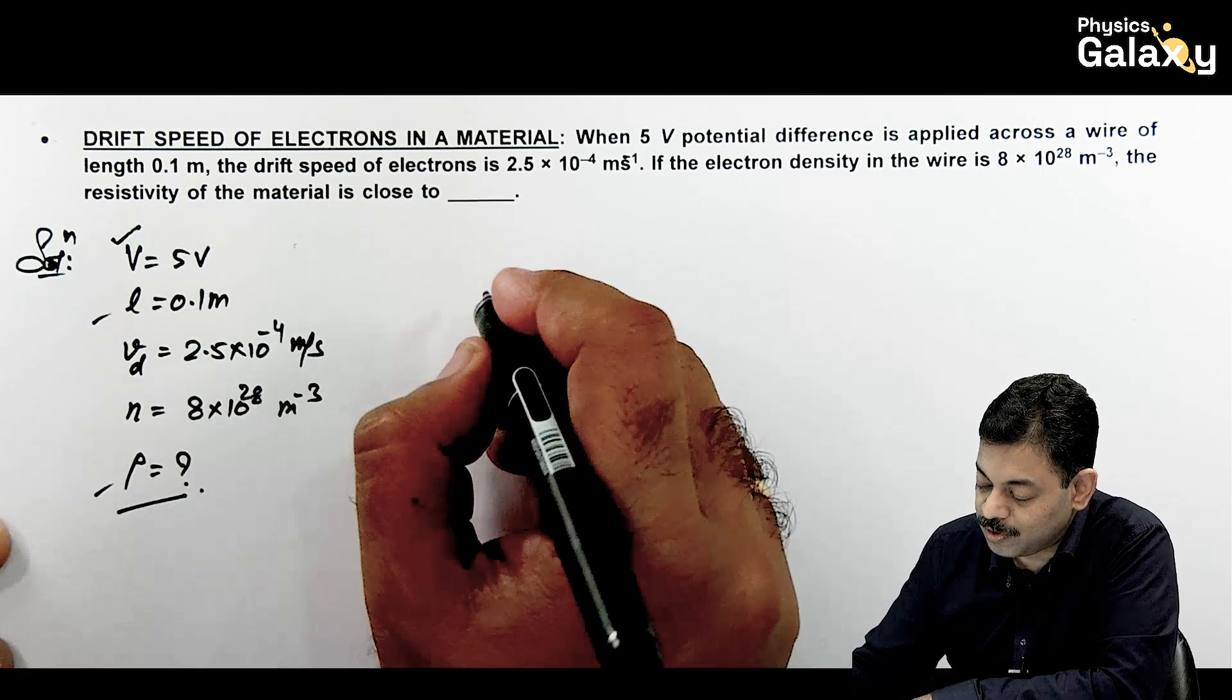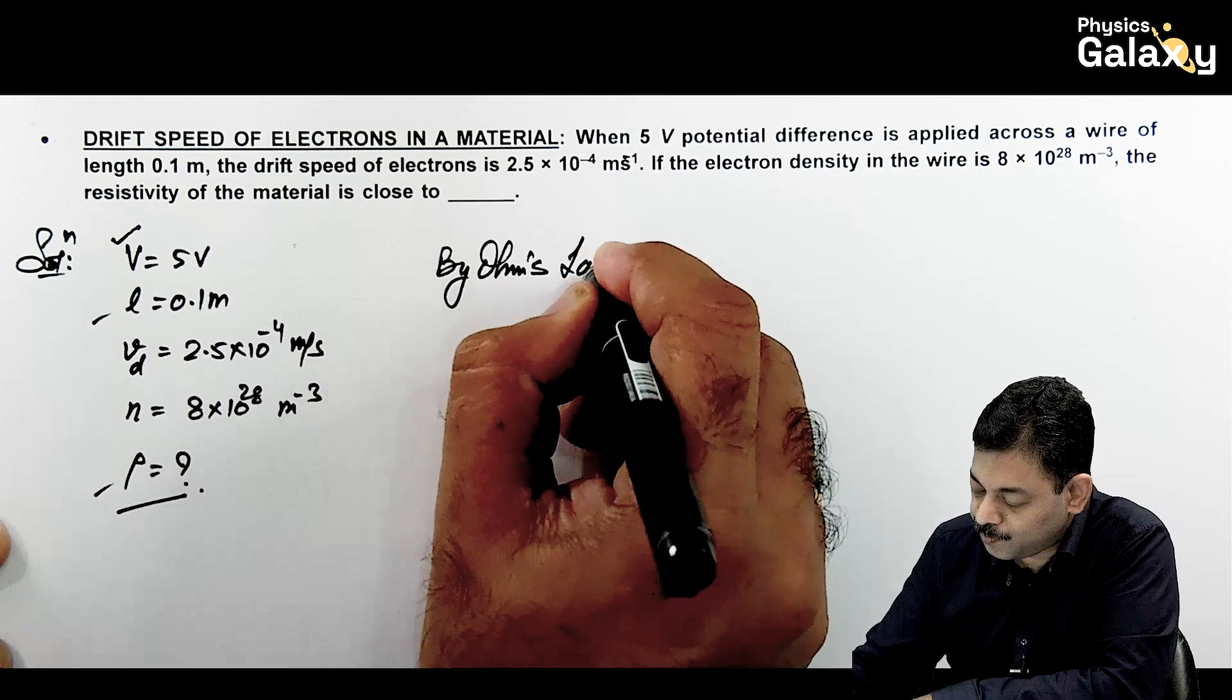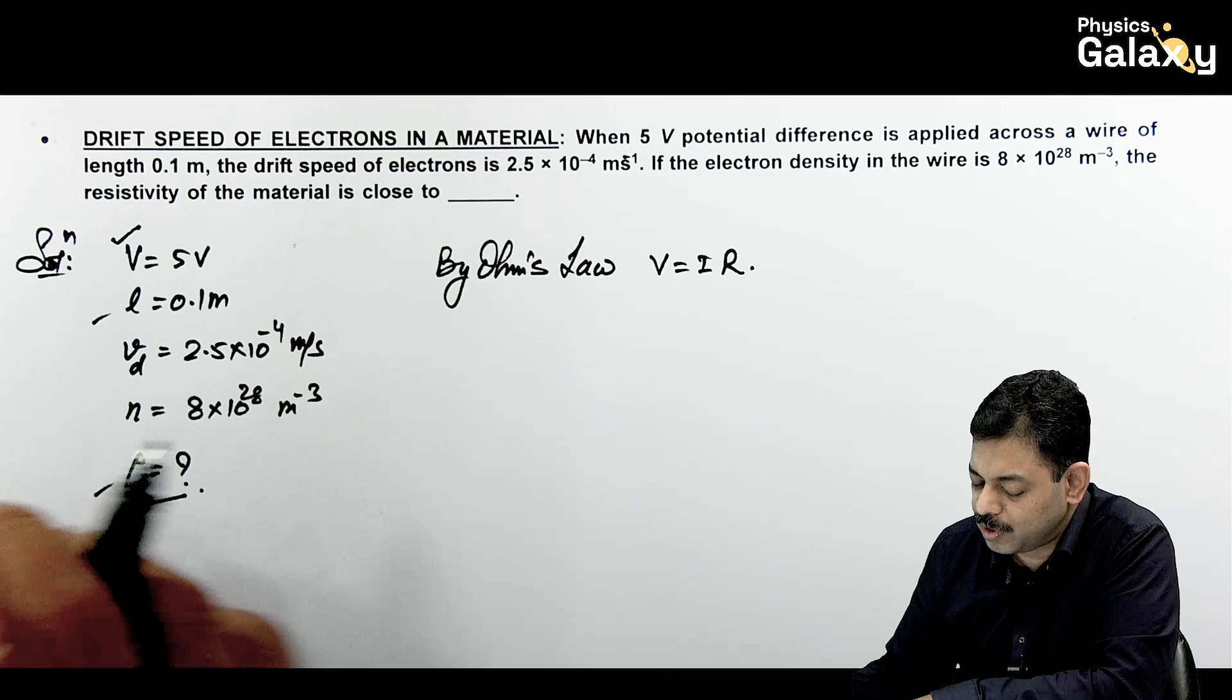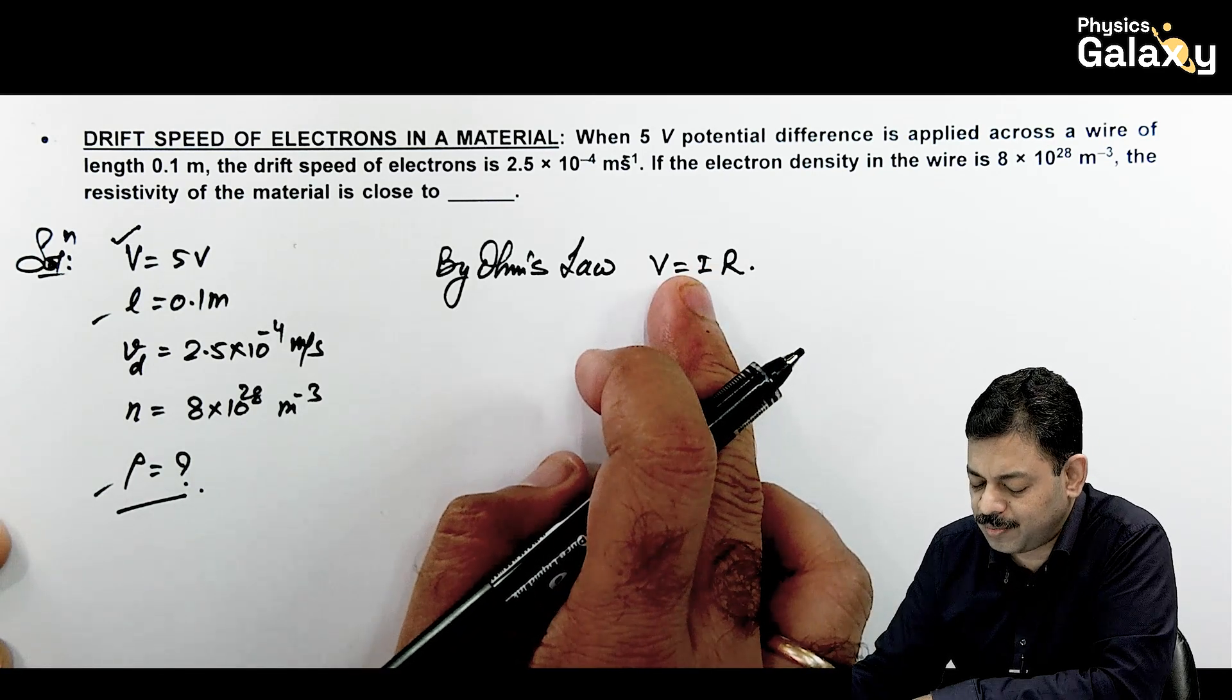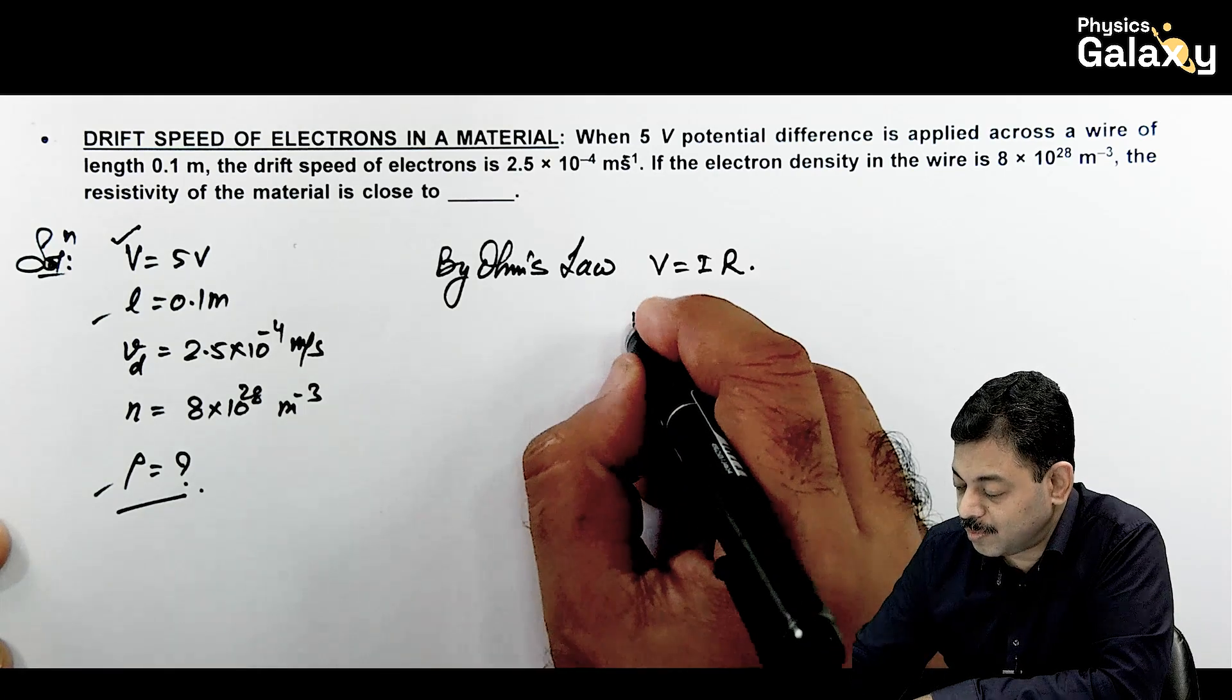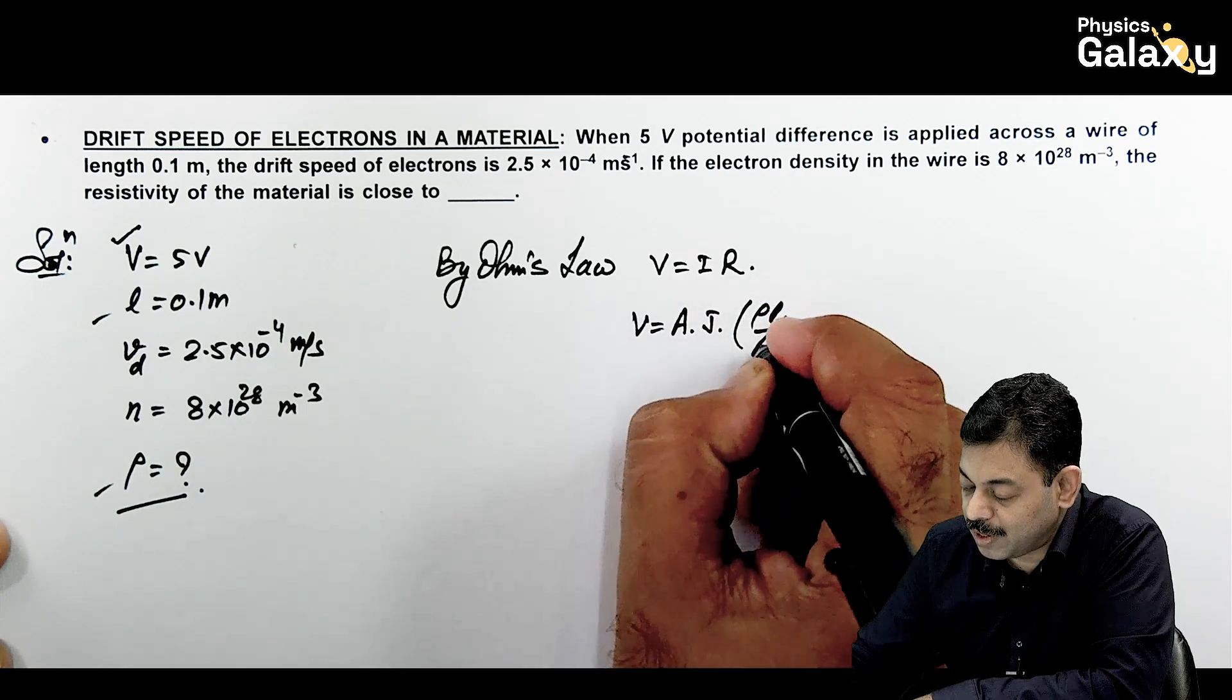In this situation, if you carefully see by Ohm's law, we can write V equals IR. And in this situation if we talk about the value of current, current can be written as cross-sectional area multiplied by current density. So this can be written as V equals area multiplied by J, and resistance can be written as rho L by A.